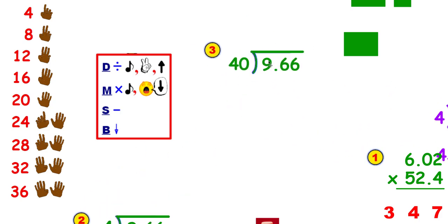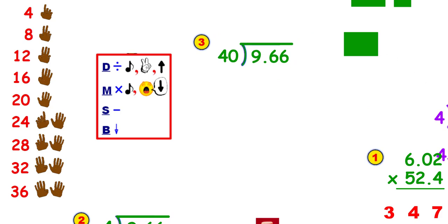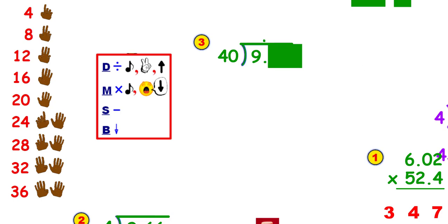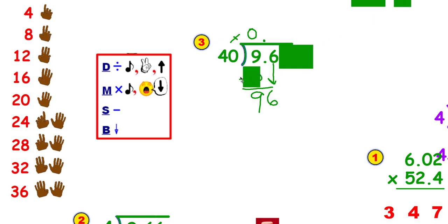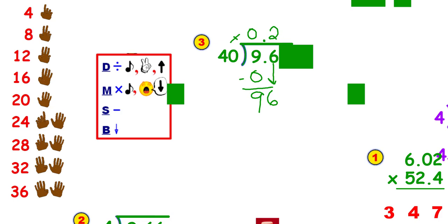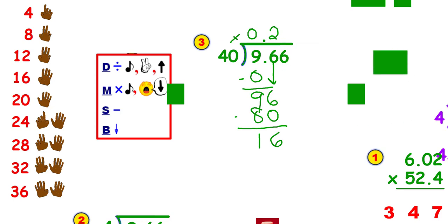Here's the last one. I'm going to float the decimal point straight up. Now I'm going to cover everything but the number I'm working with. I can't get any groups of 40 out of 9 because 40 is bigger than 9. I have 9 left over. Down comes my next number. I'm going to cover 1 and cover 1. How many groups of 4 can I get out of 9? I can get 2. Now I'm going to take the covers away. 2 times 40 is 80. I have 16 left over.